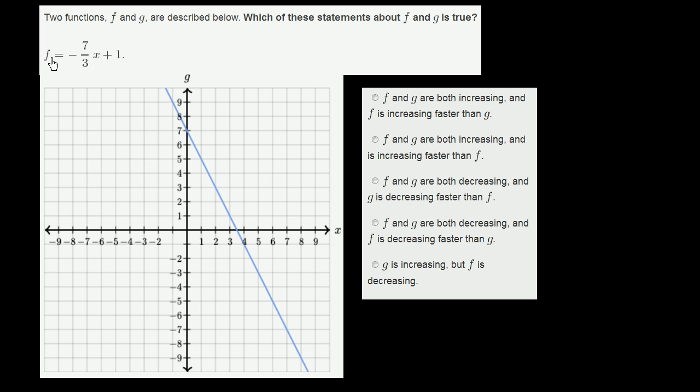So they defined f as kind of a traditional linear equation right over here. And this right over here is g. So this right over here is g of x. And that also looks like a linear function. We see it's a kind of a downward sloping line.